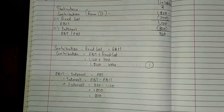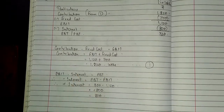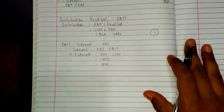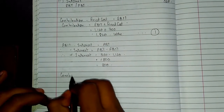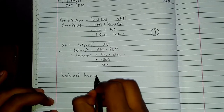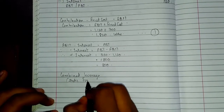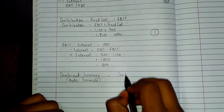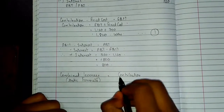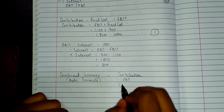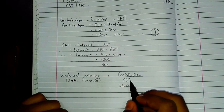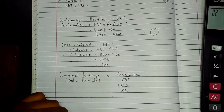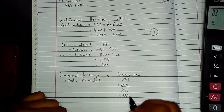So now what they have asked us is to calculate the percentage change in earnings per share if sales increase by 5%. Before finding that out, we need to find out the static formula of combined leverage. Combined leverage — static formula. The formula is: Degree of Combined Leverage equals Contribution divided by PBT. Contribution is 1820, PBT is 320. So 1820 divided by 320 equals 5.6875 times. This is very important — we have to write this.